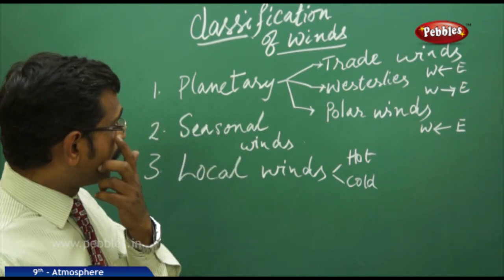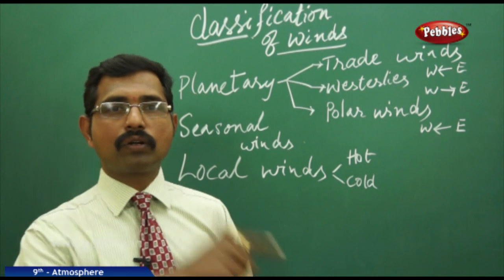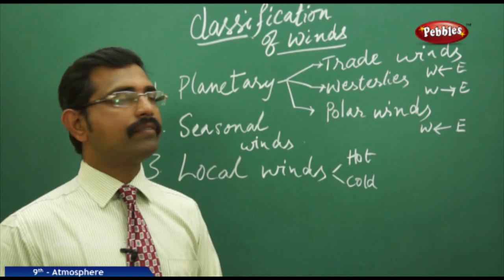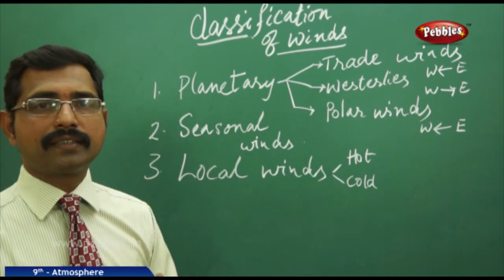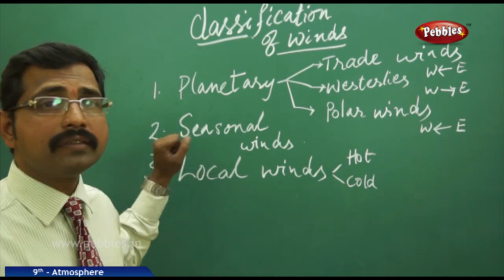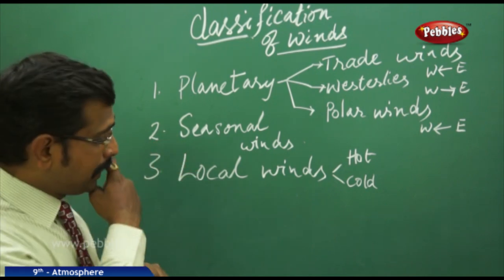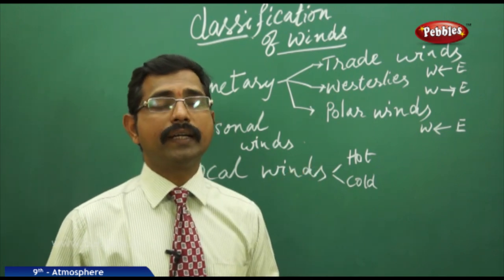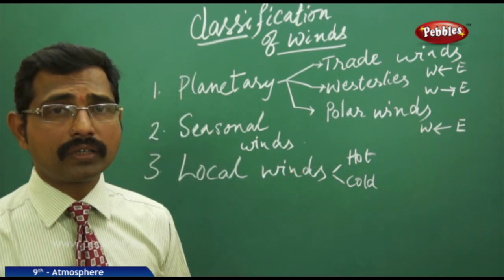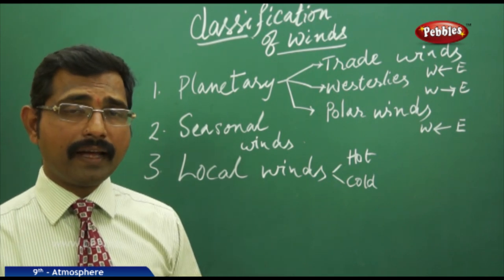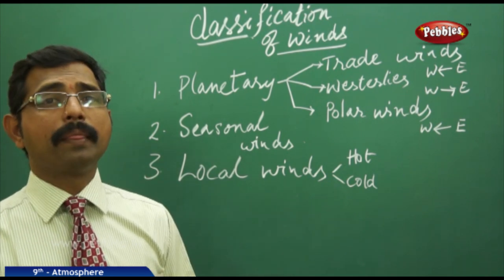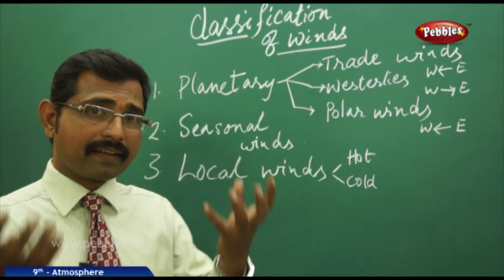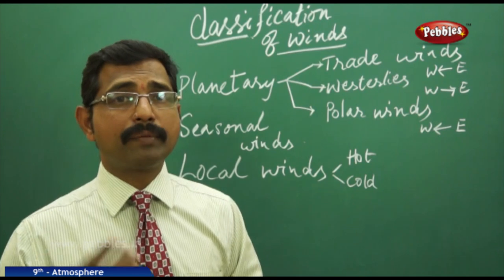At the same time, northeast trade winds will cross the equator and we get monsoons in winter. Likewise, we discuss seasonal changes, rainfall—all in the seasonal wind effect. Local winds are again divided into two types: hot and cold. These hot winds occur when the land is heated up and raises the temperature.